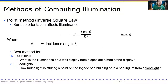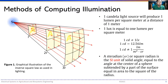The point method is best for spotlights and floodlights. For spotlights, the question is: what is the illuminance on a wall display from a spotlight aimed at the display? For floodlights, the question is: how much light is striking a point on the facade of a building, a parking lot, or a sports game venue? This method is based on the inverse square law, shown in the figure.